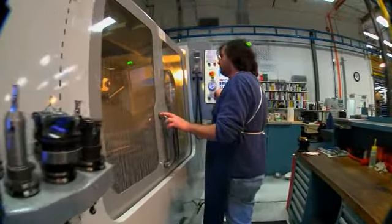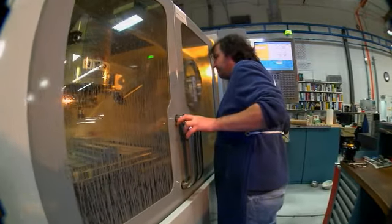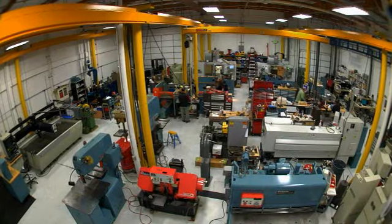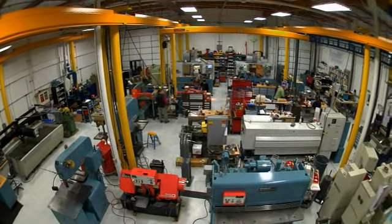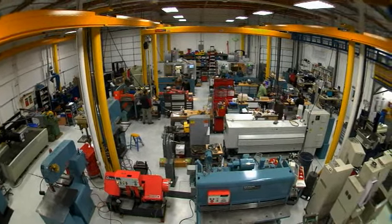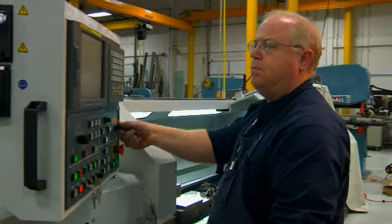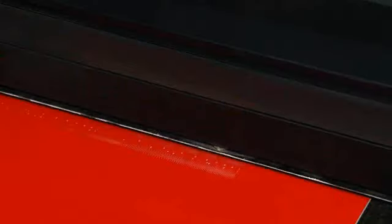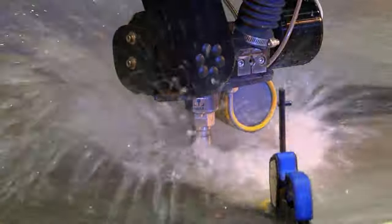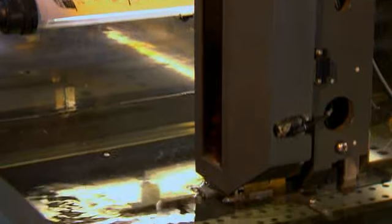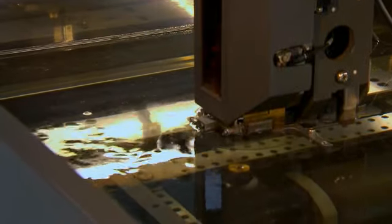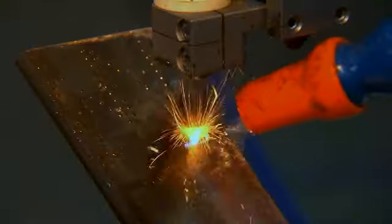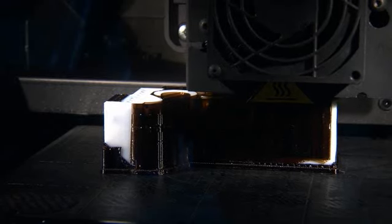Proving the concept of inventions frequently requires building something tangible. Our state-of-the-art machine shop occupies almost 6,000 square feet and features computer-controlled mills and lathes, welding equipment, laser cutters, a high-pressure water jet cutter, electrical discharge machining tools, precision grinding and sheet metal tools, and 3D printers.